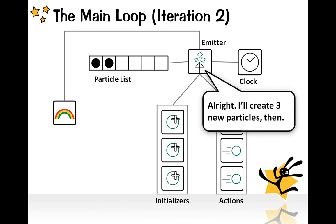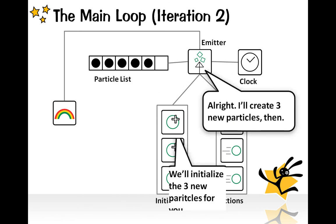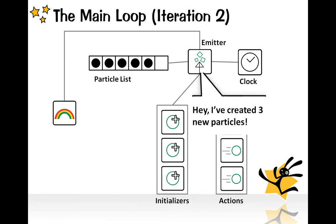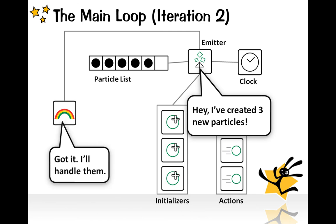So the emitter creates three new particles, and these three particles are initialized by the initializers. And this initialization is handled by the renderer.